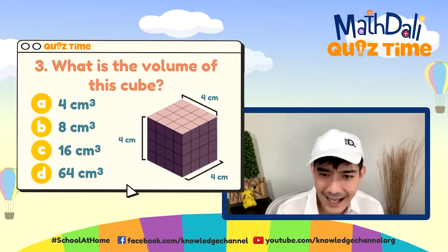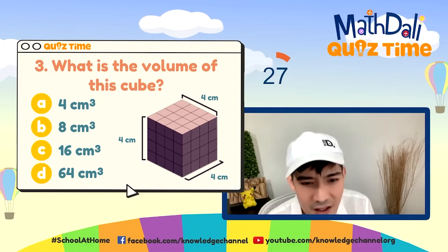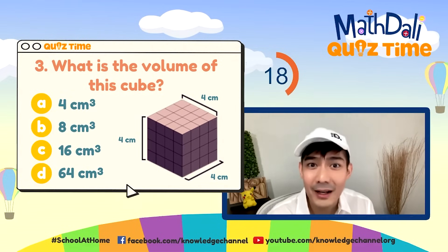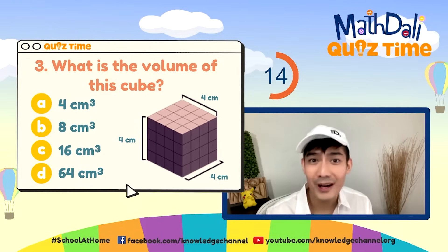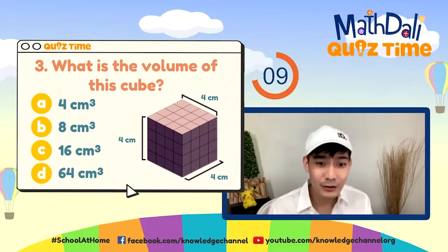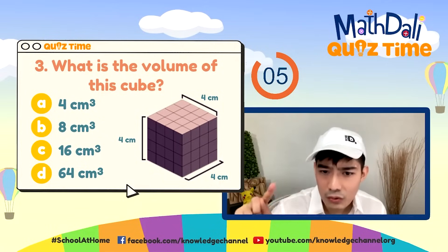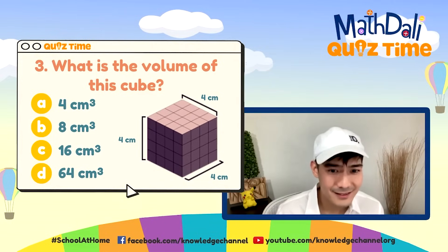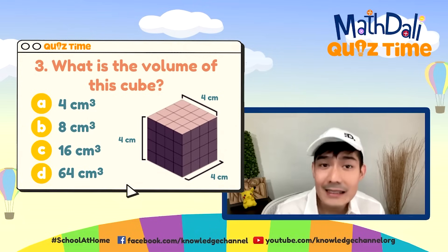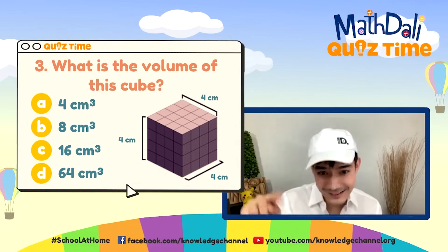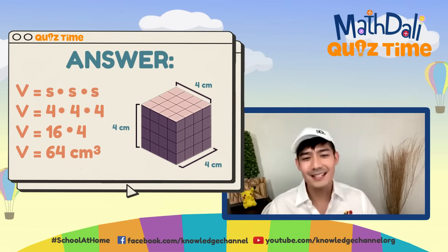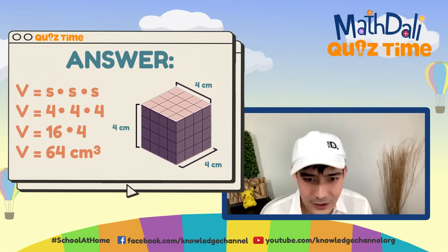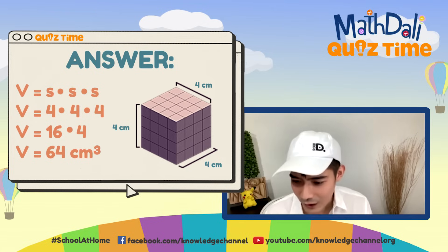Question number 3: What is the volume of this cube? Hirapan natin — 30 seconds to analyze. Go! Is it 4, 8, 16, or 64? Tandaan nyo — cube ito. Bilangin nyo lang yung isang side. Kung alam nyo na ang isang side, multiply yung sarili nya tatlong beses: 1, 2, 3, 4. Okay — 4 centimeters ang side.